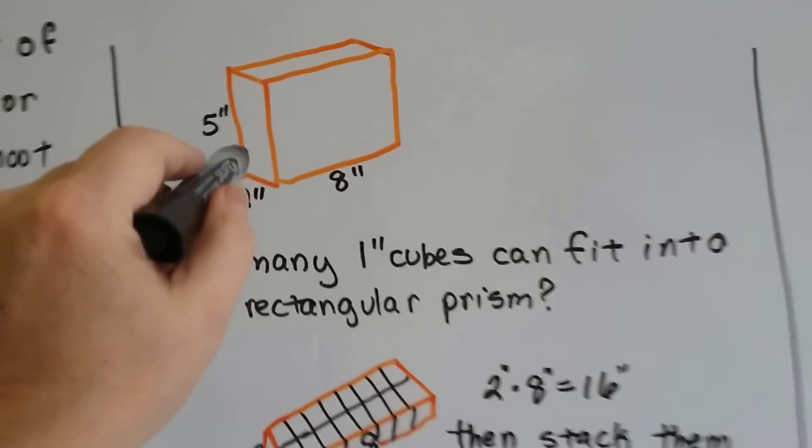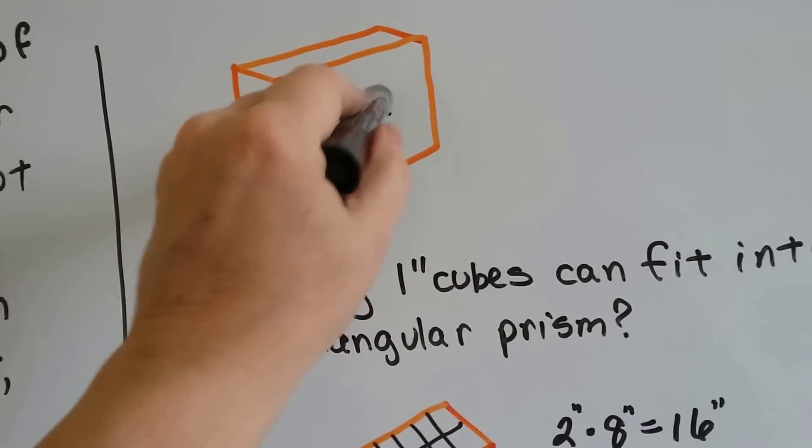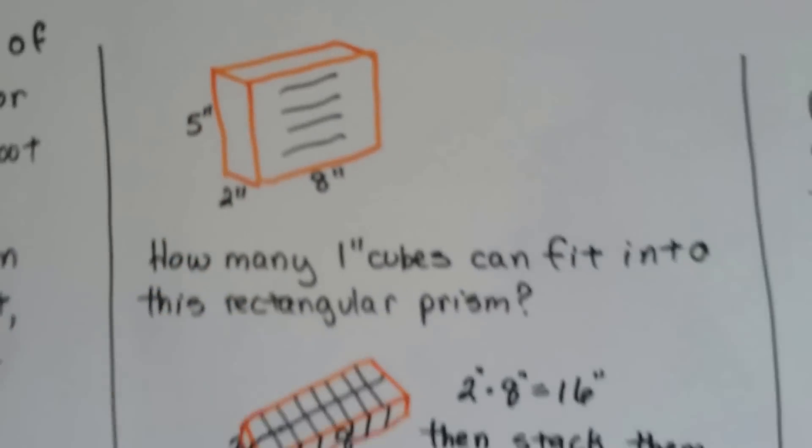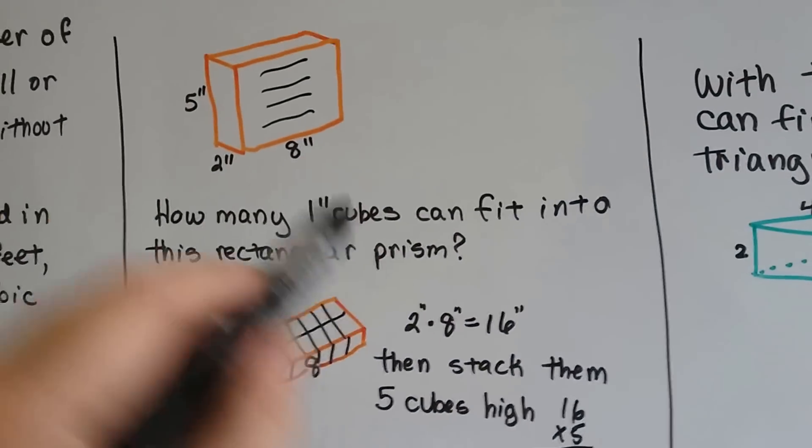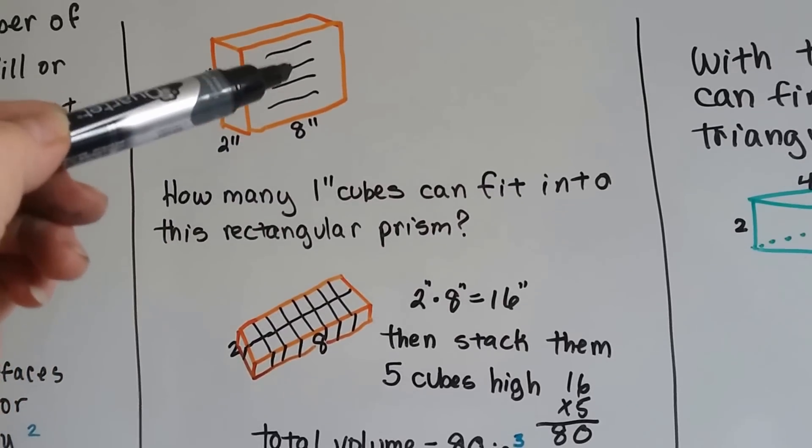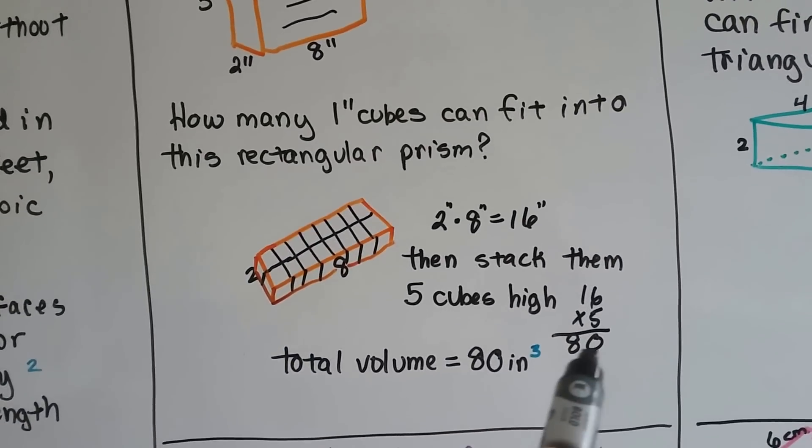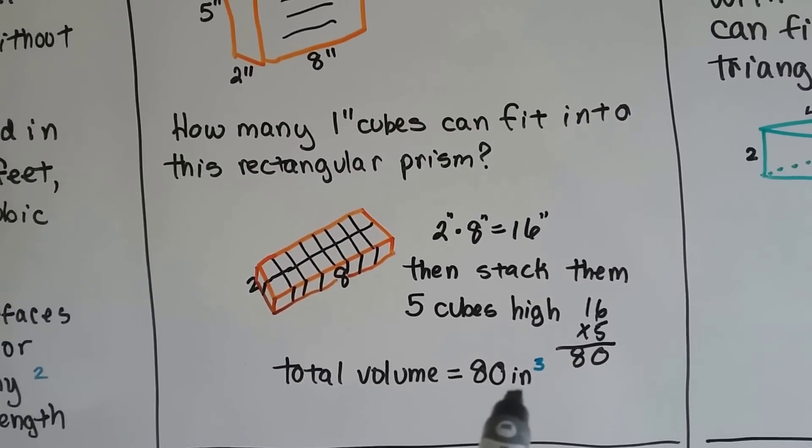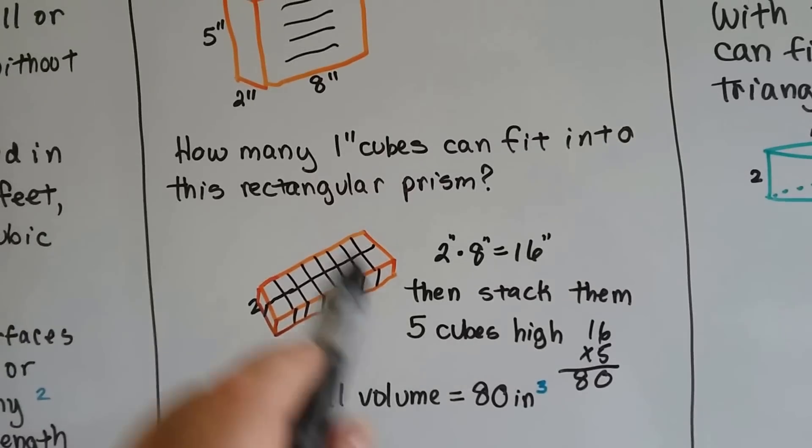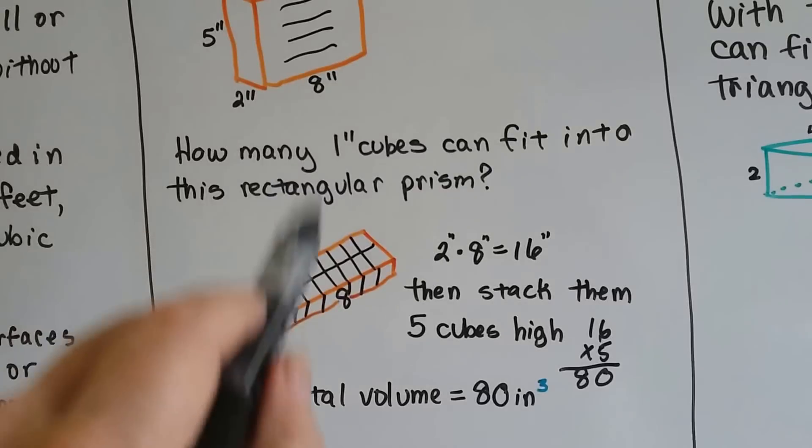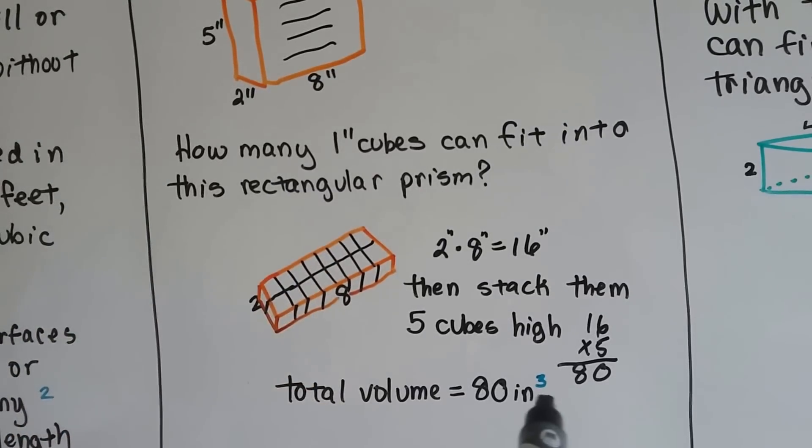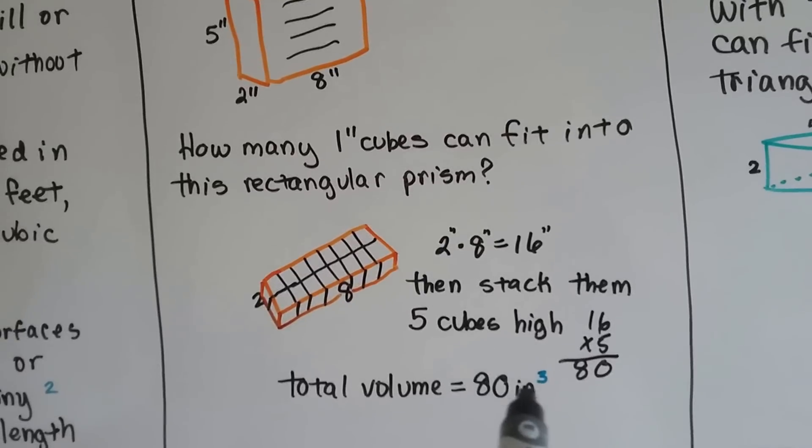That's just the first layer; we need 5 layers. So we have 16 times 5, which equals 80. Our total volume is 80 inches cubed. Because we're dealing with inches and cubes, we use our little 3 exponent: 80 inches cubed.